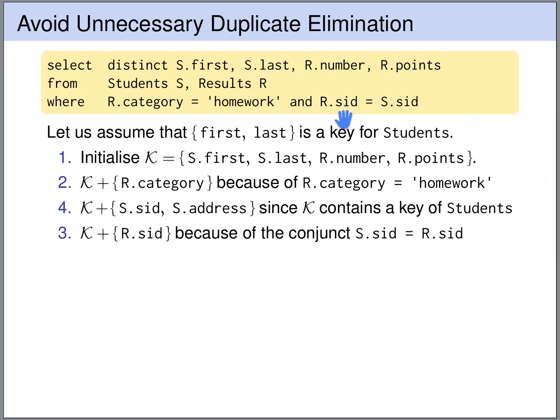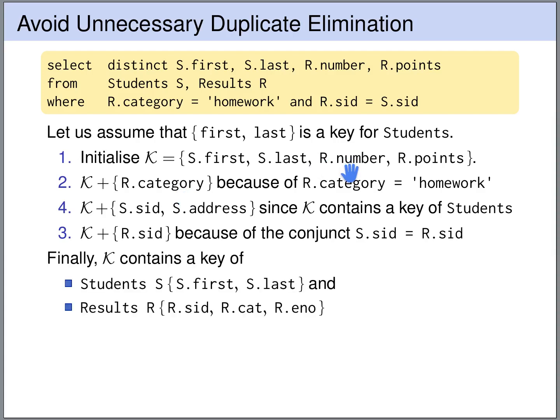Now we cannot add anything more to K, so we check whether K contains a key of each tuple variable listed under FROM. K already contains a key of S — namely S.first and S.last. Does K also contain a key of R? The key of the results table consists of the student ID, the category, and the number. We have R.sid, R.category, and R.number all in K. So K contains a key of each tuple variable under FROM — the condition is fulfilled, and we can conclude that DISTINCT is superfluous and can be removed.